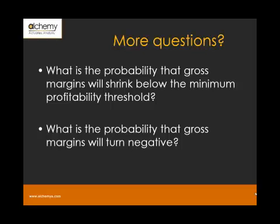Here's a very different, related, and interesting application. You take the same concepts that we've worked with so far and turn them into a very different question: What is the probability that gross margins will sink below the minimum profitability threshold? And also, what is the probability that gross margins will actually turn negative? Both of these questions have very important and interesting applications when it comes to tracking, managing, and reducing risk at a senior management level.